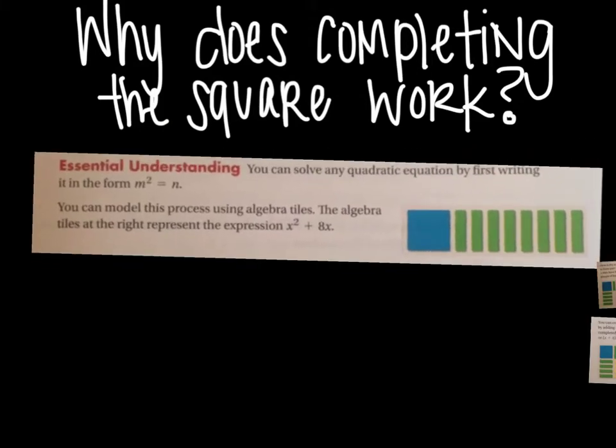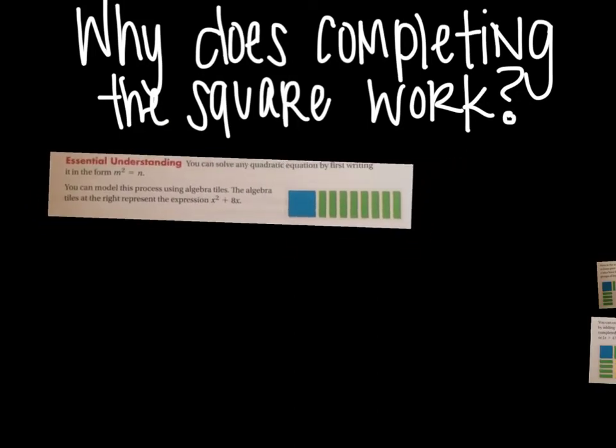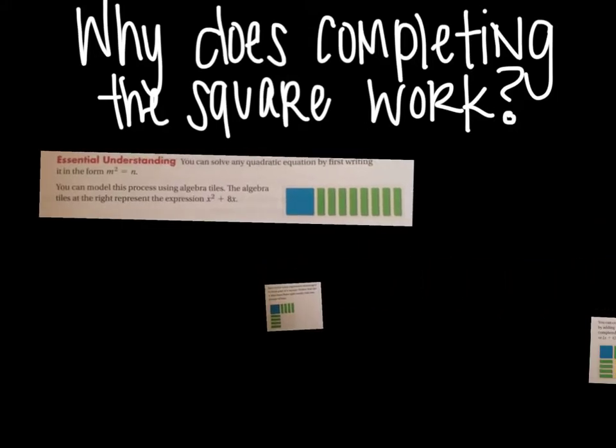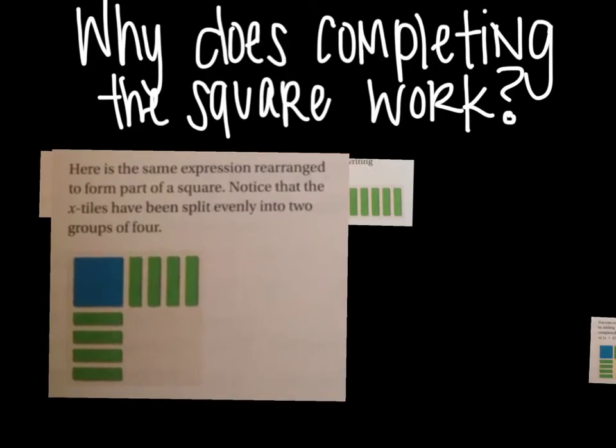And that is shown in this picture here. This is the x squared piece and then there are x's which are represented by the green. And if you count them, there's 8 of them, making it equal to 8x. So there's the algebra tiles of that equation. We're using the example x squared plus 8x.